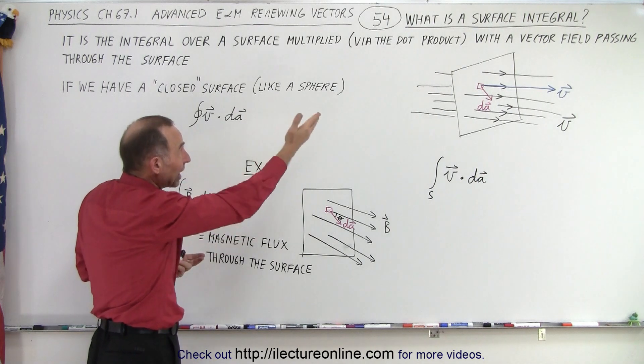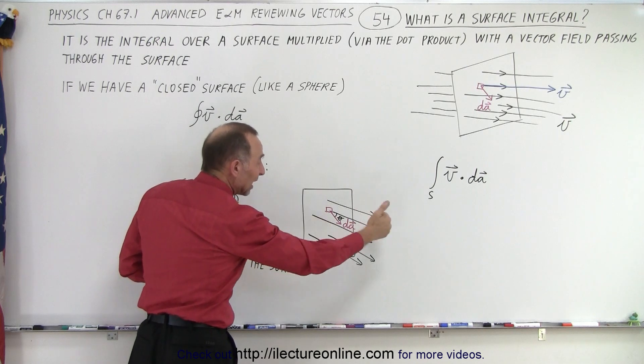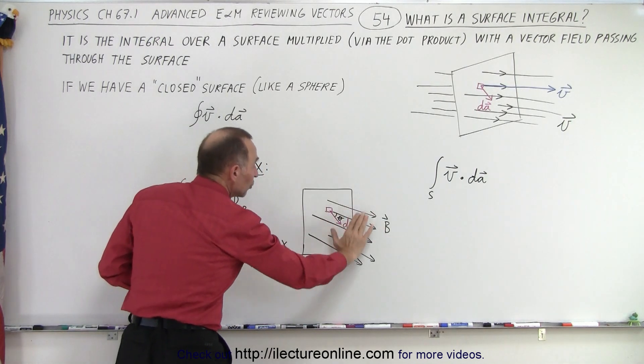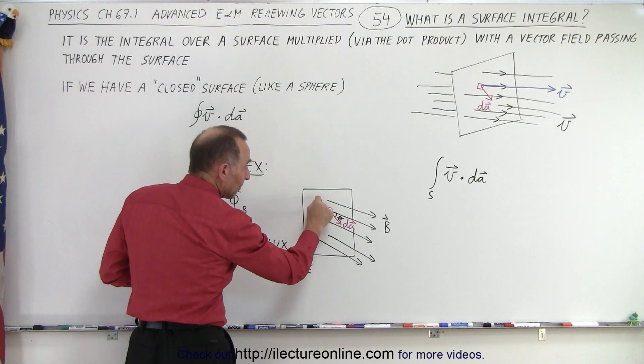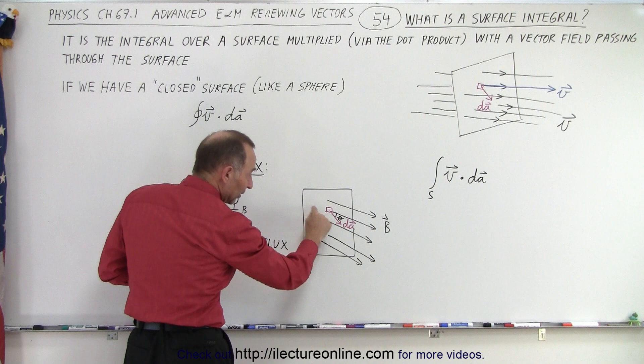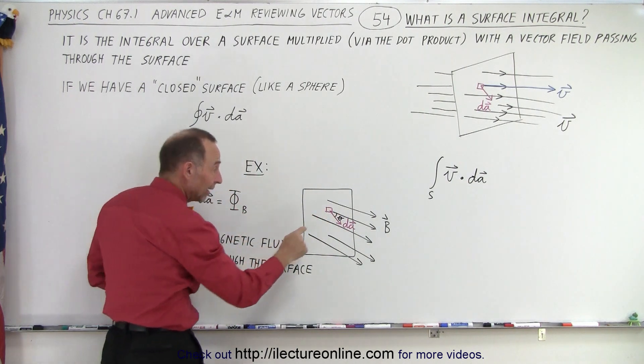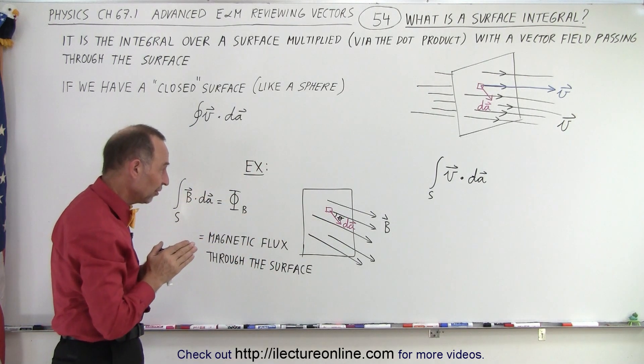An example of a surface integral is, here we have a surface, we have a magnetic field emanating through that surface, and we then conduct a surface integral. What that means is, we're going to take the magnitude and direction of the magnetic field anywhere along the surface, multiply it via the dot product times a small area element, which is essentially a unit vector pointing out perpendicular from the surface.